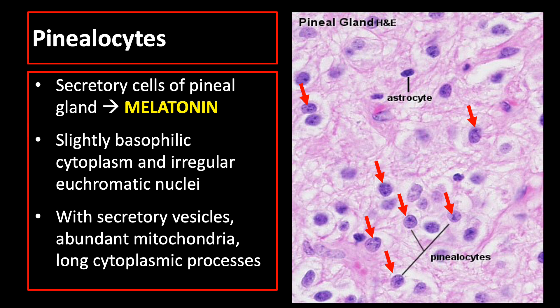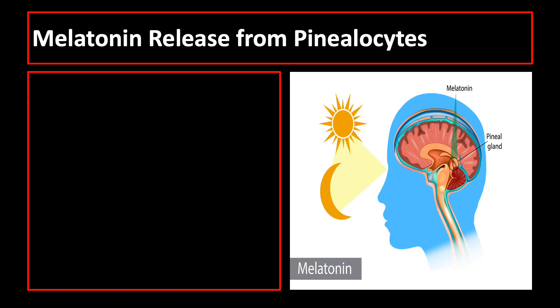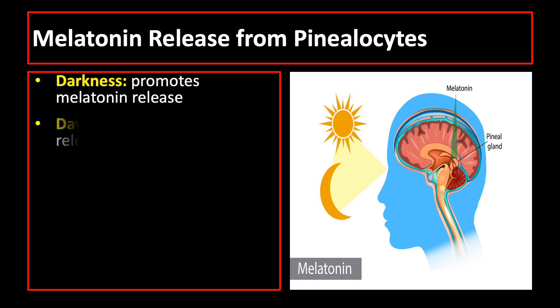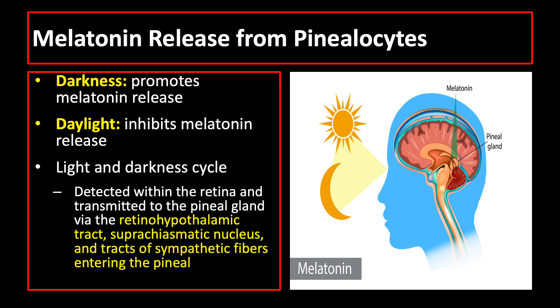Pinealocytes also have secretory vesicles, abundant mitochondria, and long cytoplasmic processes. Melatonin released from pinealocytes is promoted by darkness and inhibited by daylight. Melatonin maintains the circadian rhythm, or light and darkness cycle, of the body.